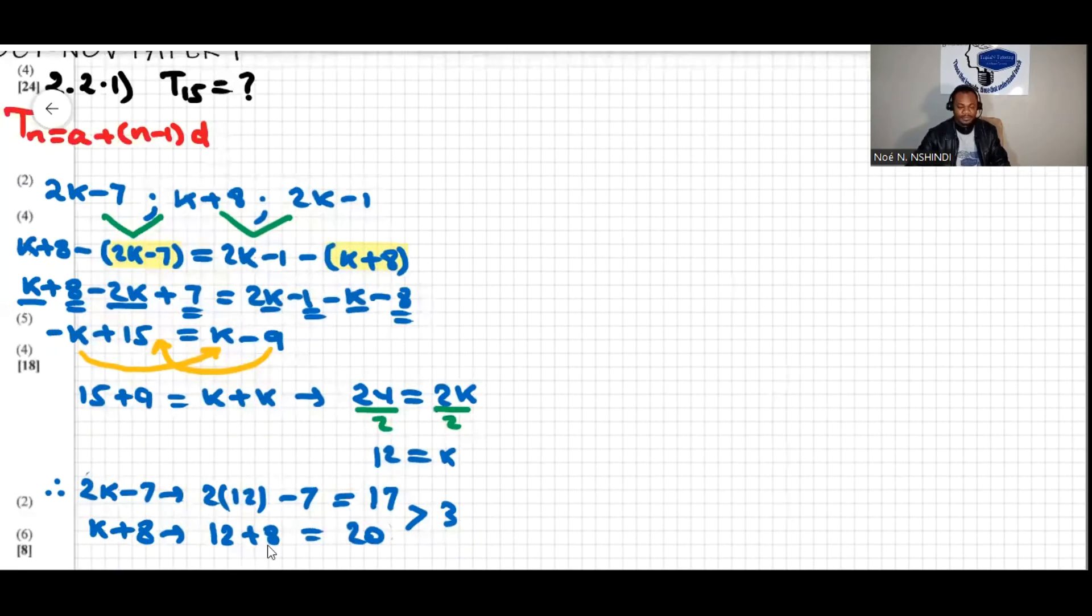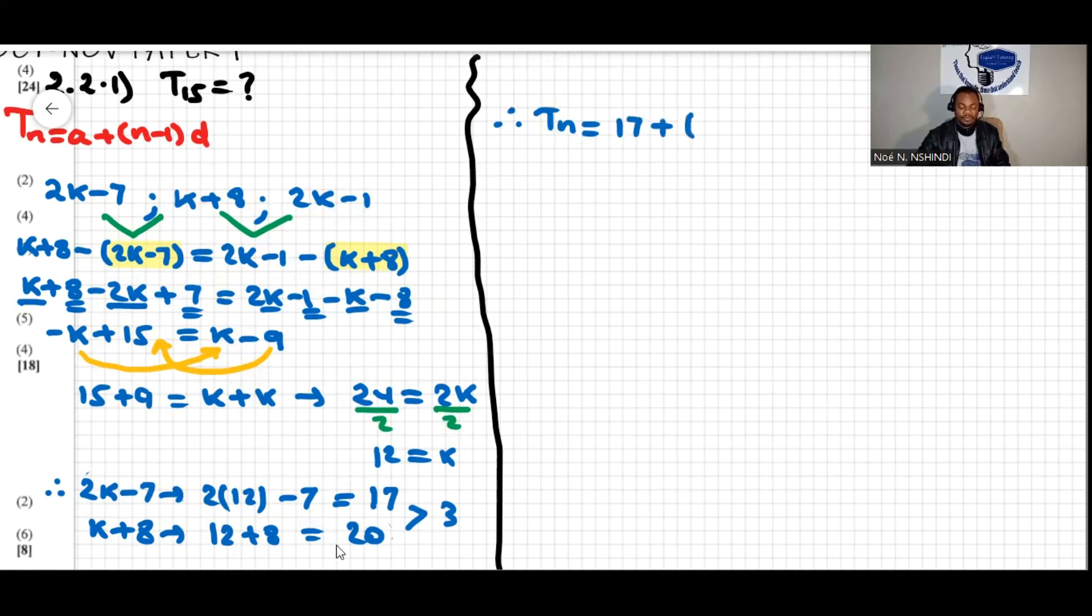We can write Tn. Therefore Tn will be a, the first term 17, plus (n minus 1) times the difference which is 3. Now this makes Tn equal to 17 plus 3n minus 3, and then Tn will be equal to 3n plus 14.